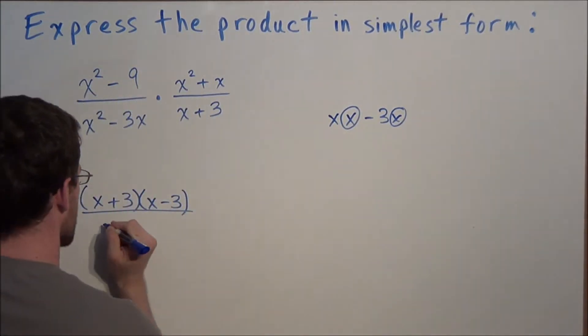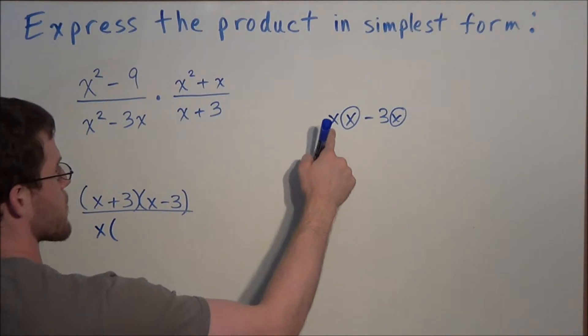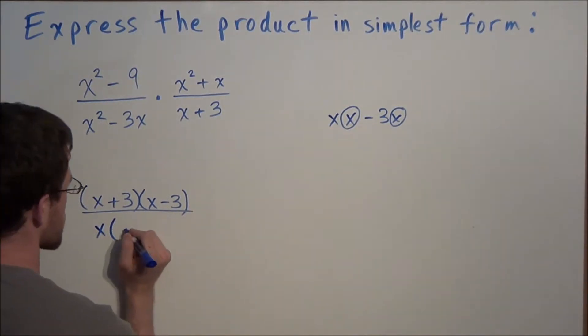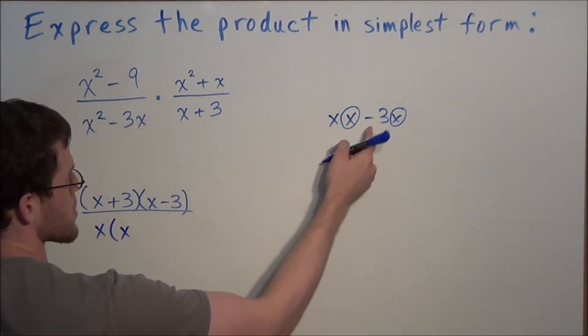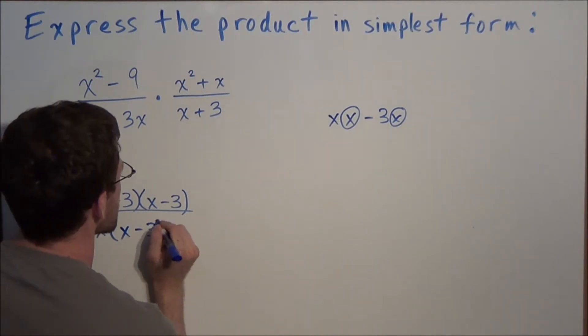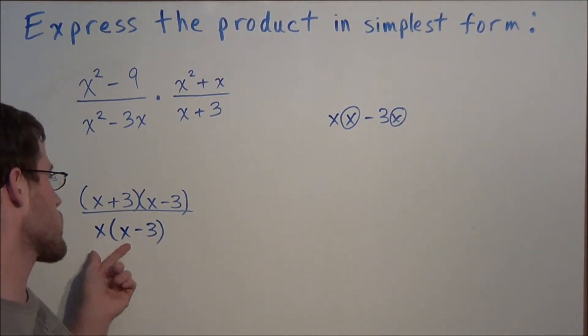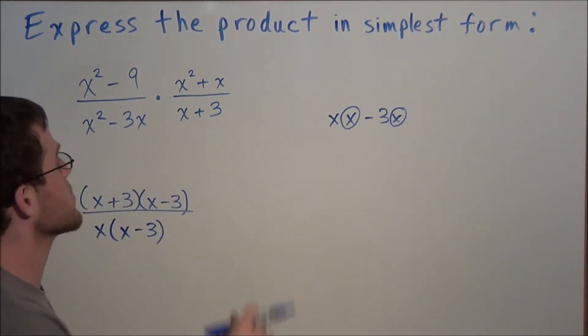When we factor out a GCF of x, notice that for the first term, all that's left is x, and for the second term, all that's left is negative 3. If we wanted to check that we factored correctly, we could redistribute the x, and it would bring us right back to x squared minus 3x.